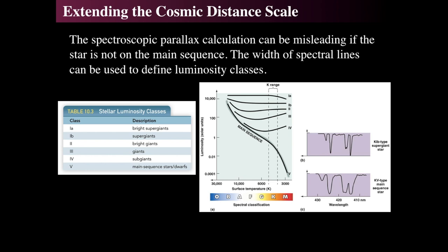Remember that the closer to luminosity class 1 a star is, the narrower the lines. The absorption lines for main sequence stars are the broadest, because they're the densest stars. Higher density means higher pressure, which means the atoms are moving faster in the atmosphere of the star. If they're moving faster, they can absorb and emit wavelengths of light off of the normal wavelengths of the atomic transition. But when they're giant stars, atoms and molecules are under low pressure — their relative speeds are lower — so you get less Doppler broadening of the lines.